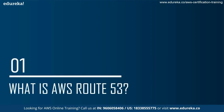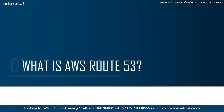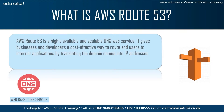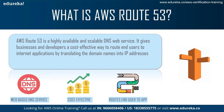The first thing we talk about is what is AWS Route 53. As we all know, AWS is the web services provided by Amazon. Route 53 is one such service which is basically a highly available, scalable DNS web service. It gives businesses and developers a very cost-effective way to route end users to internet applications by translating the domain name of a website to a scalable IP address.